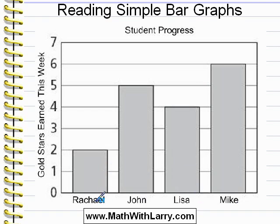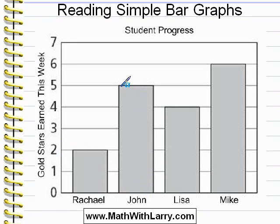Now let's take a look at this first bar for Rachel. To see how many gold stars she has, all we do is look to see how high the bar reaches, and then we look over to the left. We can see it reaches two, so she has two gold stars. This is very simple. For John, we go up to the top of the bar, go over to the left — it goes up to the number five line, he has five gold stars. Continuing, Lisa has four gold stars, and Mike has six gold stars. This is just a very basic example, but later on we'll see more complicated bar charts.